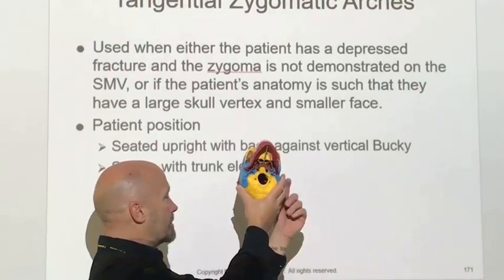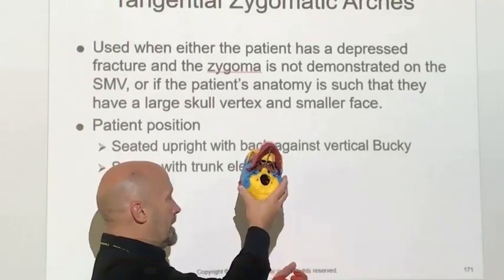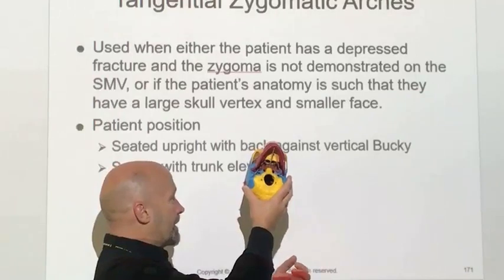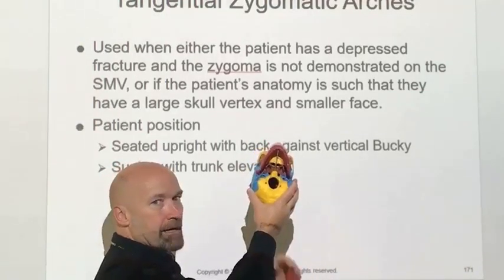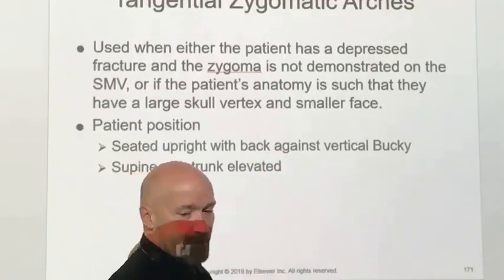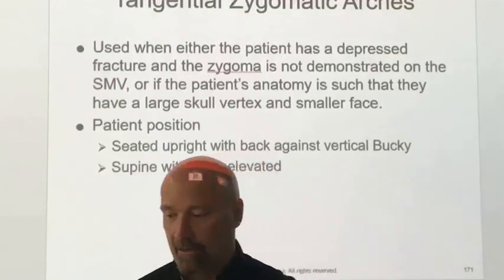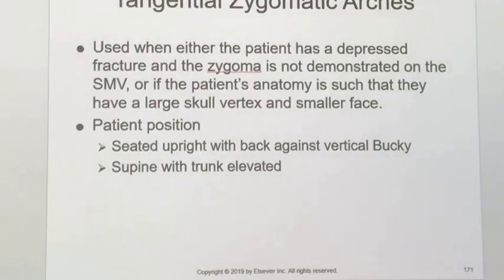Notice that you only see one zygomatic arch doing that, not both. Your central ray should just be through that zygomatic arch, collimated down to include the soft tissue on both sides — anterior and posterior — so a very small collimated area. This can and should be done tabletop; the technique is like a finger technique — very low radiation exposure.